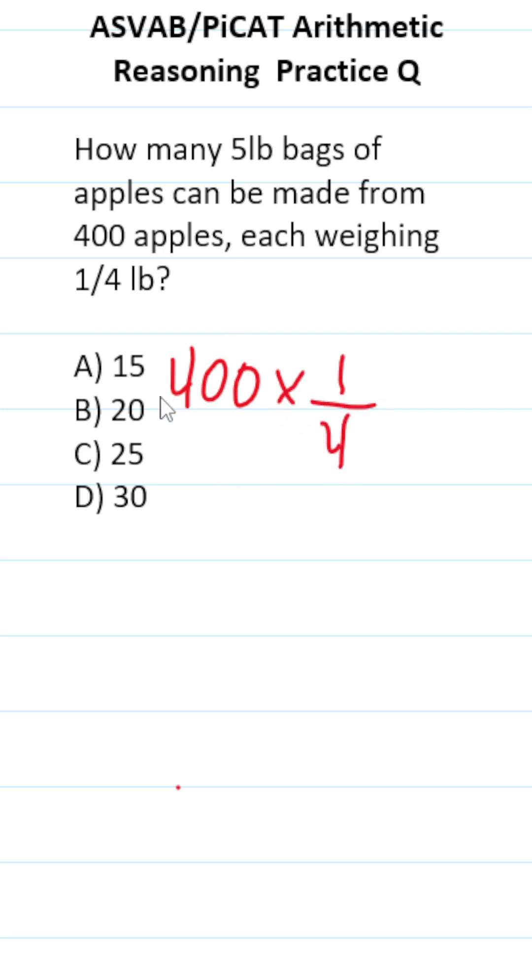If it's not obvious, what we're doing here is multiplying two fractions, because I could write 400 as a fraction by placing it over one. Then you just multiply straight across.